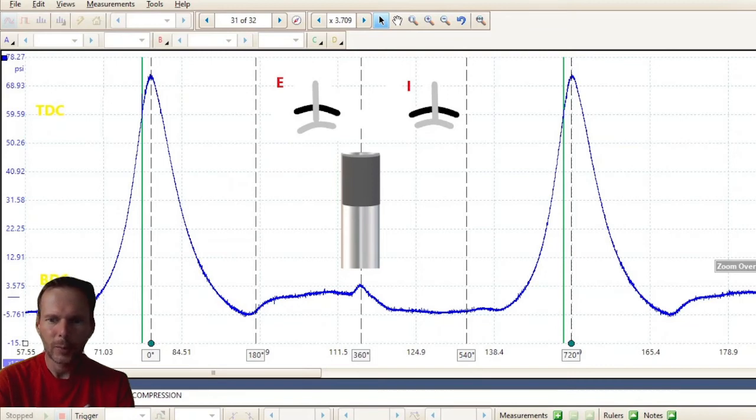Now right there, you see both valves are open. That's actually valve overlap. That's useful, you know, for higher RPM control. Less overlap, low RPM stability. High overlap, high RPM performance.